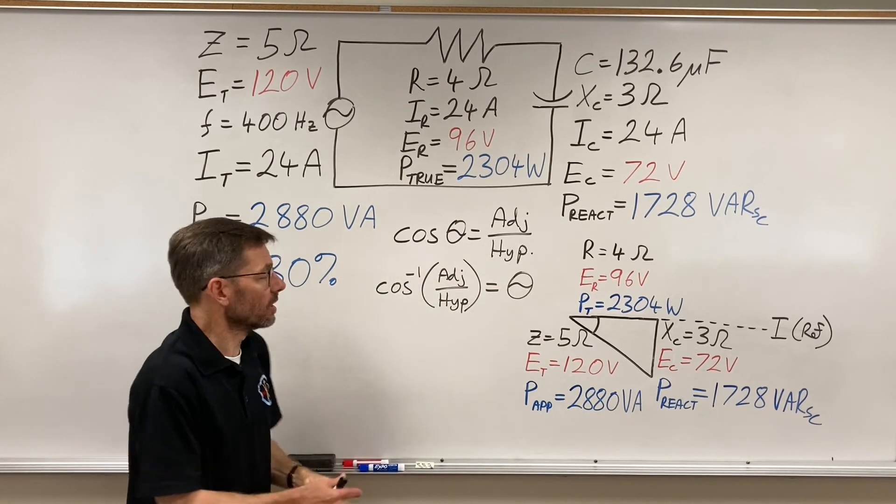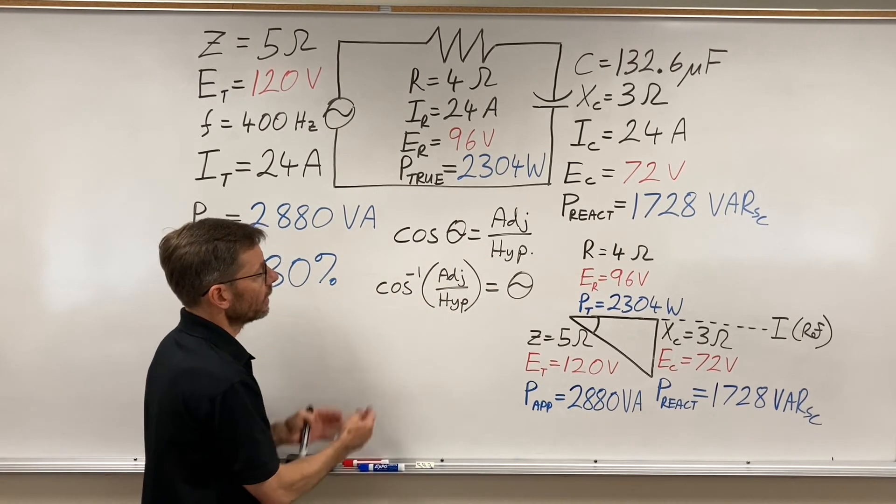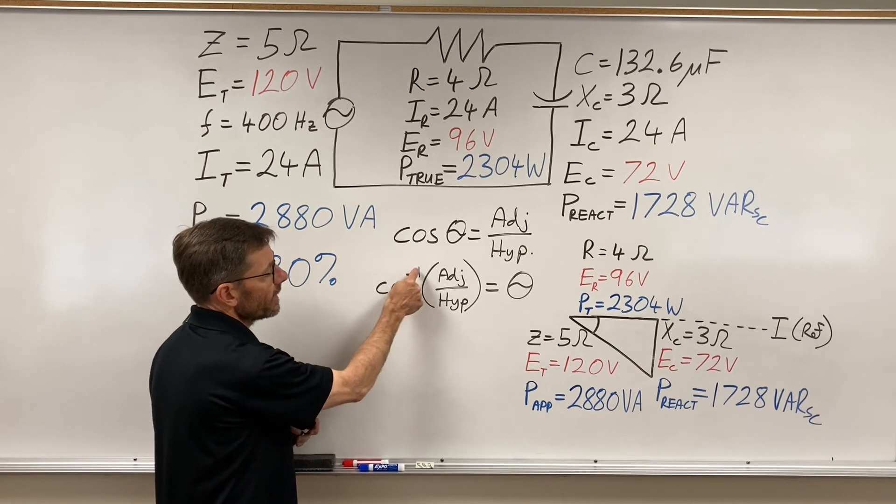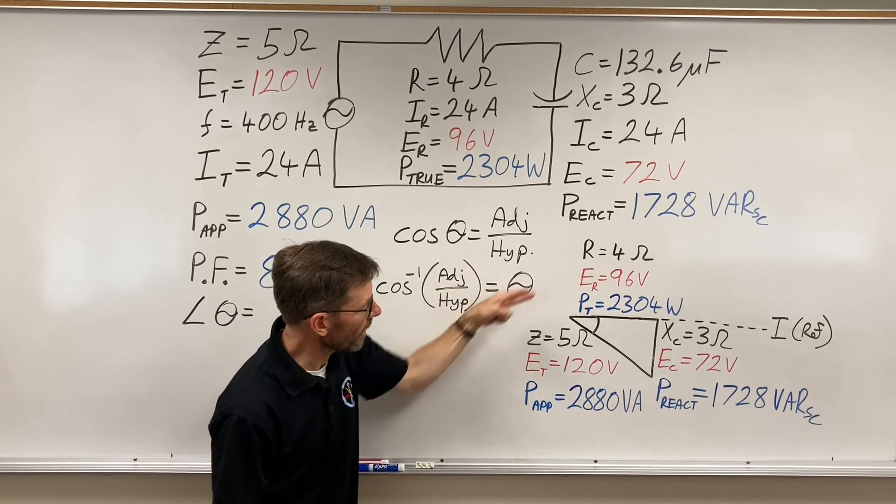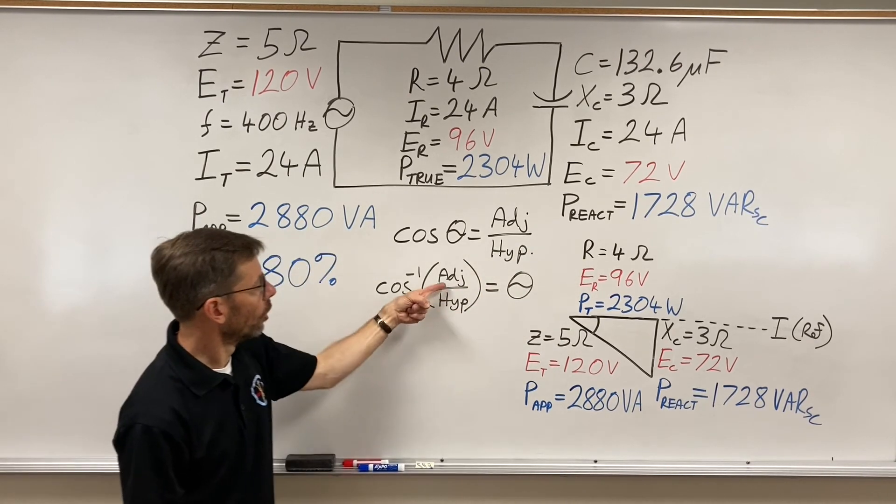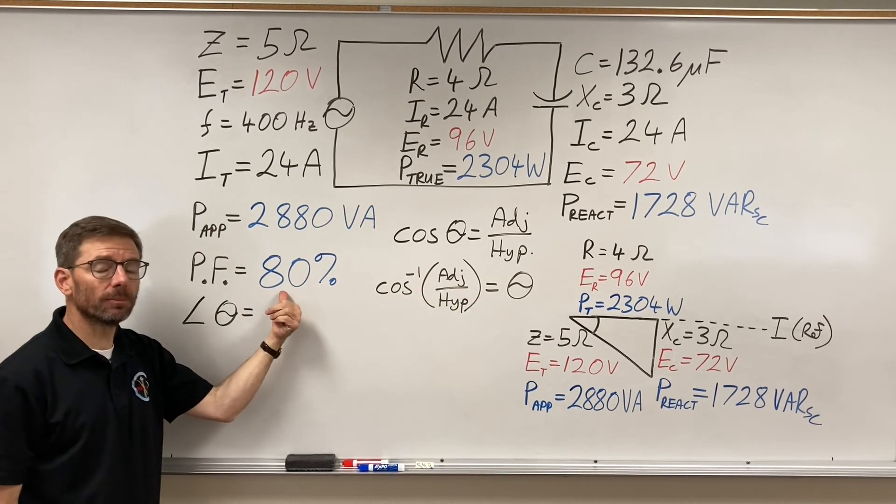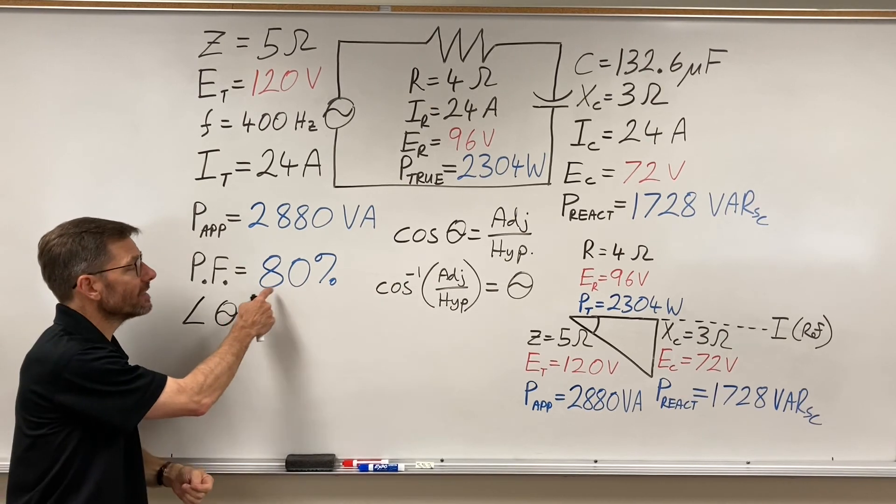We know the ratio, so we have to do the second function. Second function cosine, and you'll get something looking like this. Cosine negative 1 with the open parentheses. And you can put the ratio, any of these three ratios. Or, we know that ratio to be 80%, which is 0.8.